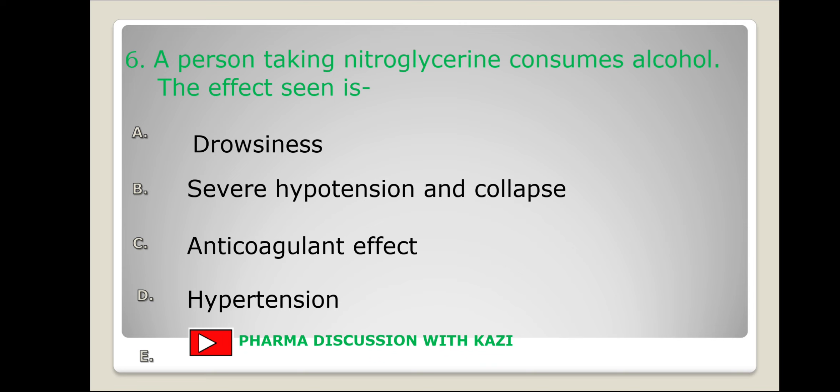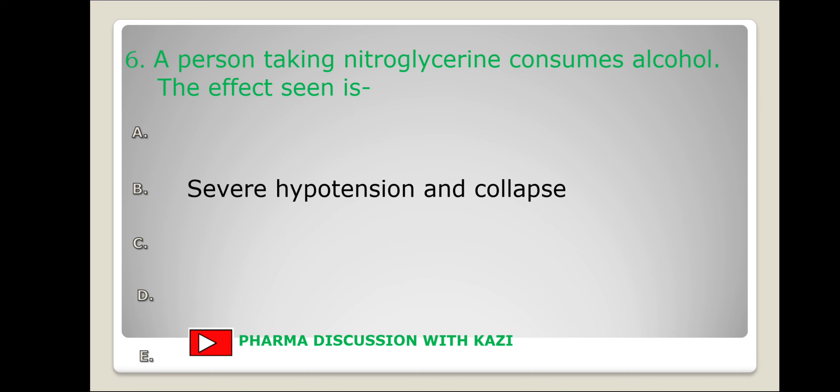Next question: a person taking nitroglycerin consumes alcohol — the effect seen is: drowsiness, severe hypotension and collapse, anticoagulant effect, or hypertension/hypotension? The correct answer is severe hypotension and collapse. This may occur due to the additive vasodilatory effect, and the effect is seen when the drug is taken one hour after starting the drink.